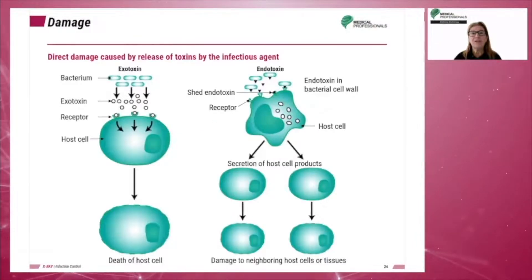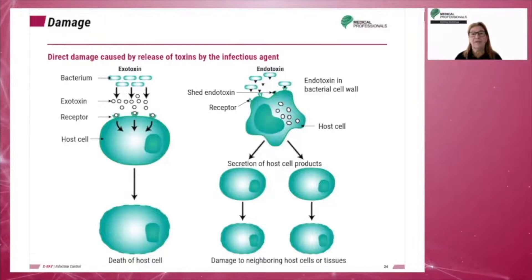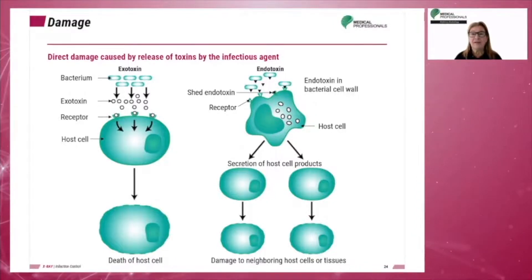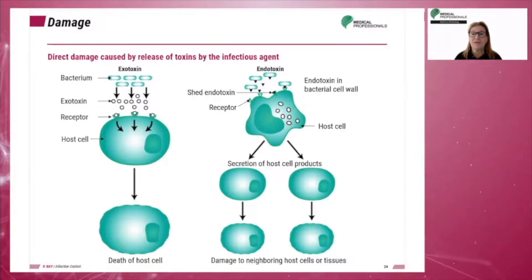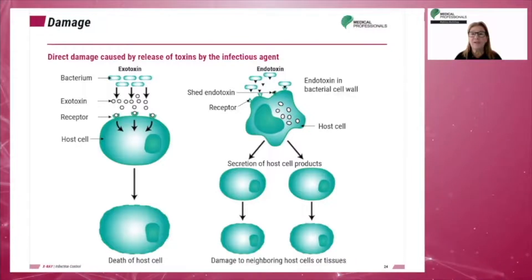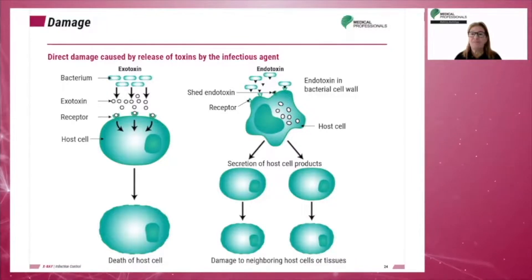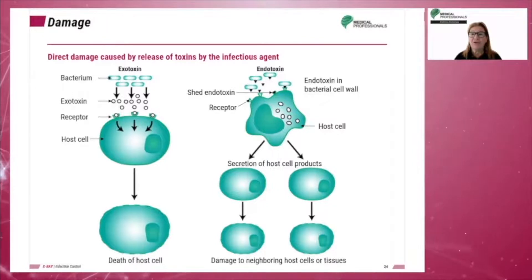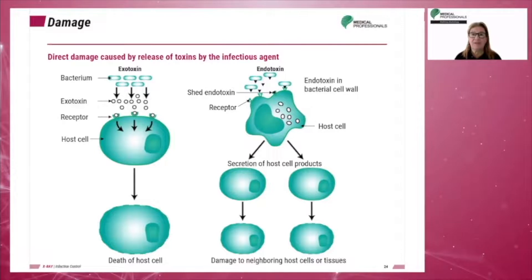Damage can be either direct or indirect. Indirect damage, or cell death, is caused by the destruction of host cells or by the release of toxins or poisons by the infectious agent. In indirect damage, there is alteration of the host's metabolism.